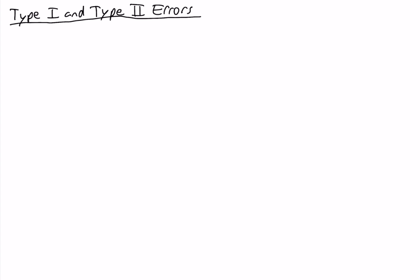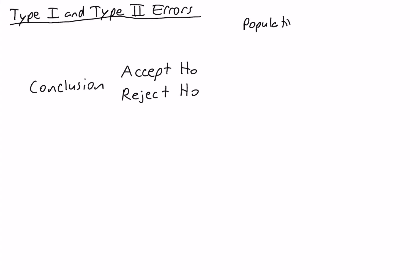The easiest way to understand type 1 and type 2 errors is to create a table. In our table, on one side we have the possible conclusions, which are to accept or to reject the null. And there are two different conditions for the population: either the null hypothesis is true, or the alternative hypothesis is true.